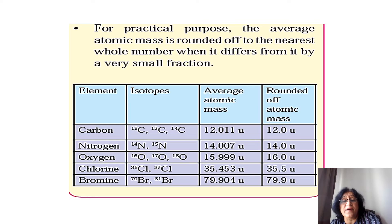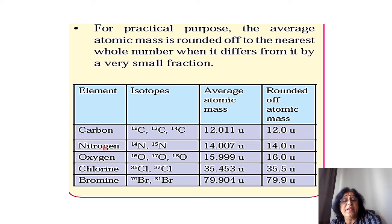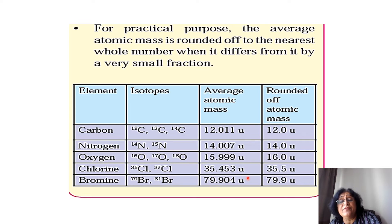For practical purposes, average atomic masses are rounded off to the whole number or one decimal place. Carbon isotopes 12, 13, 14 give an average atomic mass of 12.011, rounded to 12 U. Nitrogen isotopes 14 and 15 give 14.007 U, rounded to 14 U. Oxygen isotopes 16, 17, 18 give 15.999 U, rounded to 16 U. Chlorine isotopes 35 and 37 give 35.453 U, rounded to 35.5 U. Bromine isotopes 79 and 81 give 79.904 U, rounded to 79.9 U.